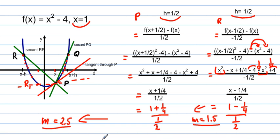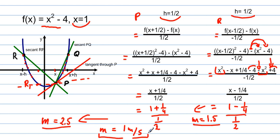Adding units makes this more meaningful — say this is a displacement function and time is measured in seconds. Then the rate of change at x equals 1 is equivalent to 1 meter per second. This is really where the application makes much more sense when a unit is defined, rather than a purely mathematical example.